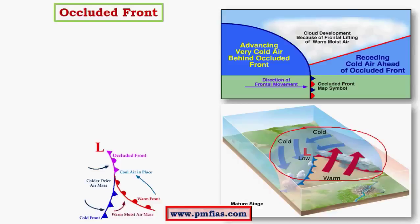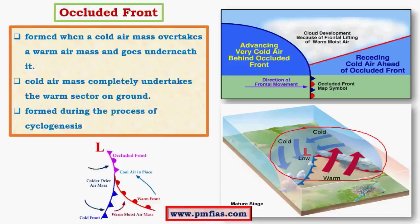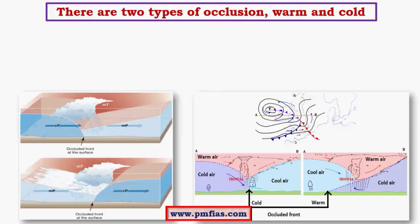Once occlusion is over, rain formation simply stops, but the ground surface will have very low temperatures because of complete occupation by the cold front. The occluded front is the reason behind cyclogenesis, that is, temperate cyclones. Cyclogenesis is the formation of cyclones. The occluded front is like the backbone of temperate cyclones.